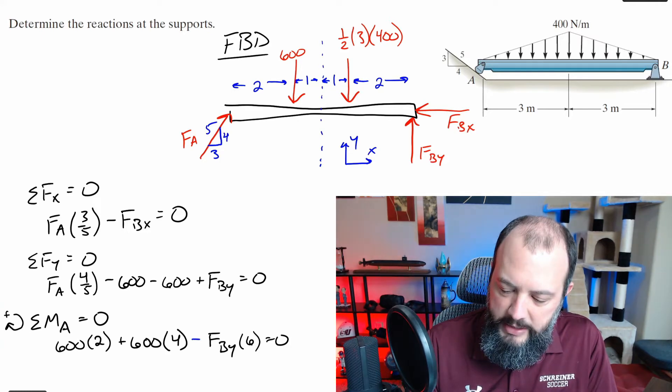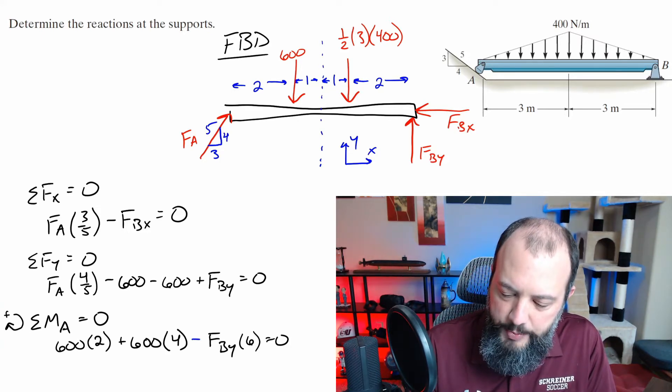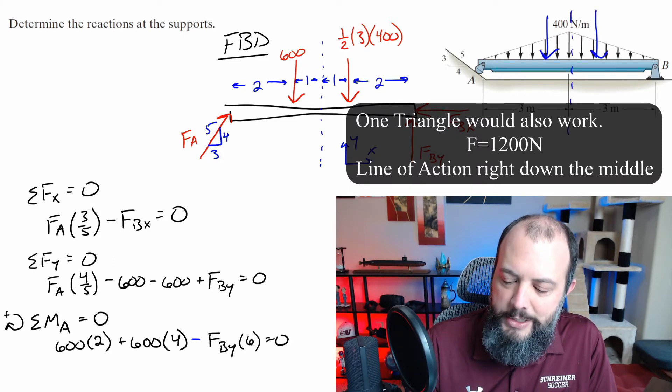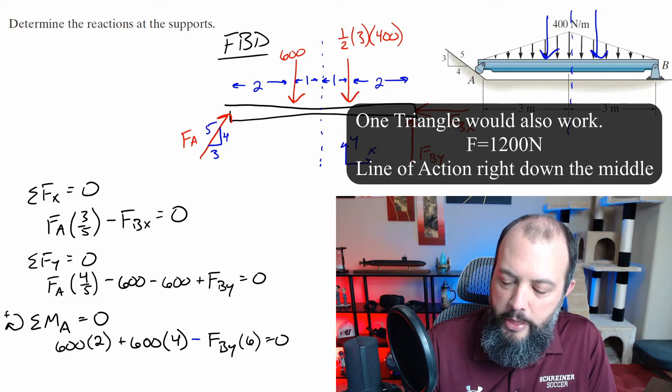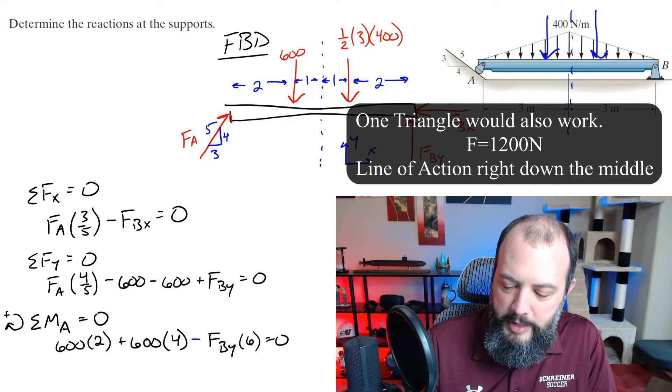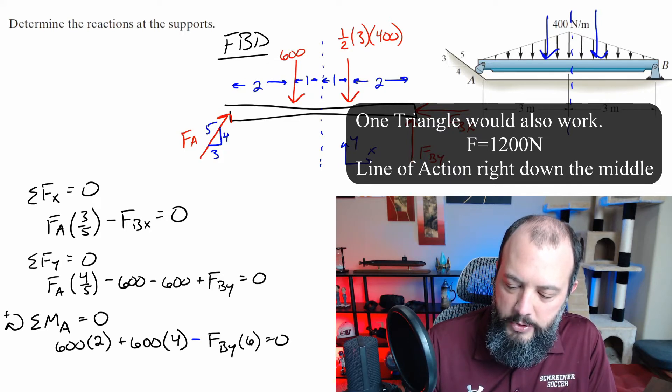When drawing the free body diagram for this problem, one of the first parts was to replace the distributed load. In that case, I decided to split this up into two different triangles instead of just one large triangle, and the centroid for each of these triangles is going to be one third of the base, but closer to the tall side, so that's why I located them that one meter away from the center, and then the area of a triangle one-half base times height for the magnitude.